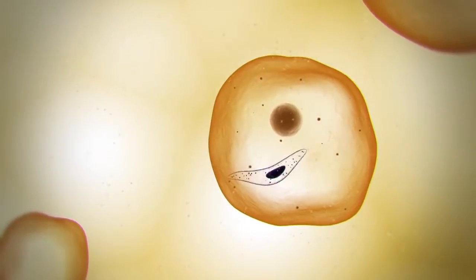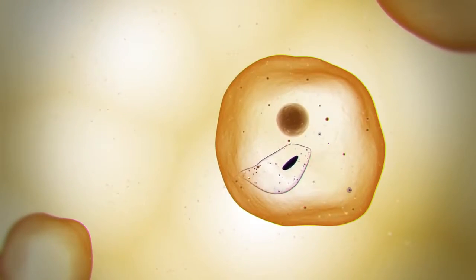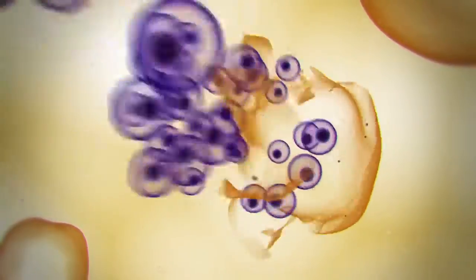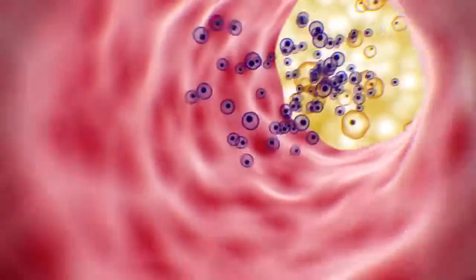The parasite develops into mature schizonts, creating tens of thousands of merozoites, which burst out of the cell and journey back toward the bloodstream.